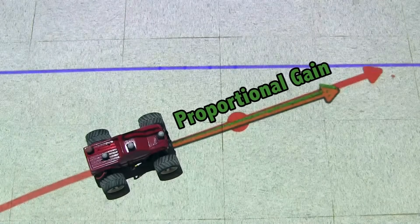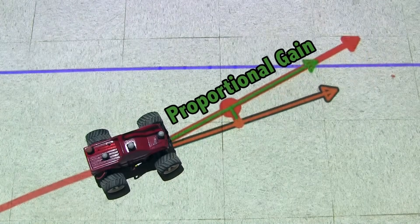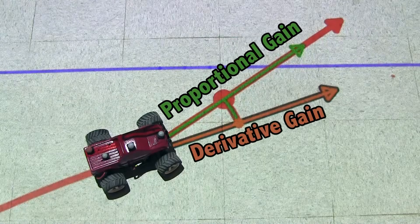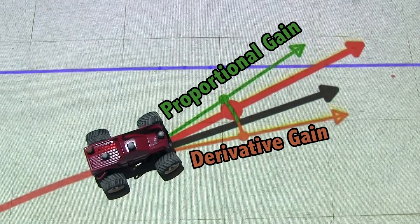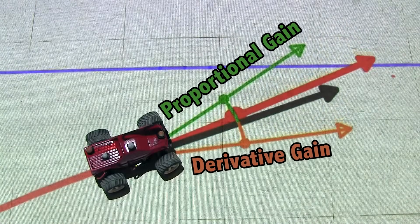Conceptually, we can think that increasing the proportional gain will increase the pull that the vehicle feels towards the desired trajectory. Increasing the derivative gain increases the resistance the car will feel against moving too quickly towards the line.